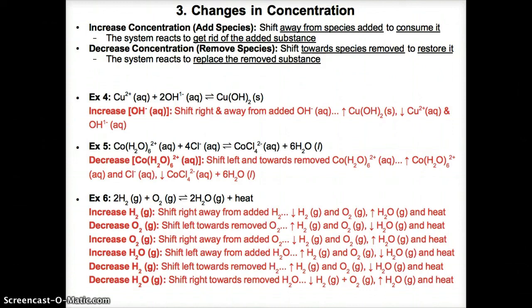In Example 4, CO2(aq) plus 2 OH⁻(aq) on the left is in equilibrium with CaCO3 solid on the right. Increasing the concentration of OH⁻ means there's too much OH⁻, so equilibrium shifts away to the right to consume it like a reactant. This lowers the concentrations of CO2(aq) and OH⁻(aq) while increasing the amount of CaCO3 solid since you produce it like a product moving towards it.